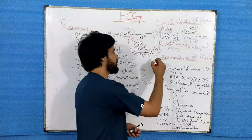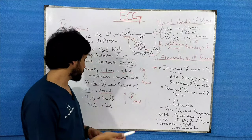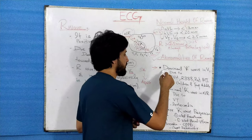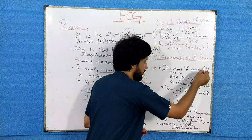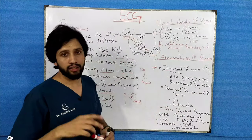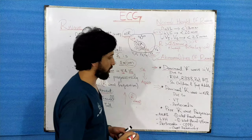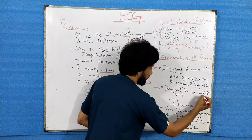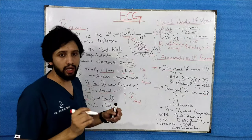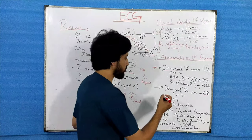The abnormalities of the R wave include: number one, a dominant R wave in V1 — normally you see a small R wave in V1 or V2, so a dominant R wave in V1 is abnormal. It can be due to RVH, RBBB, or posterior MI. In children and young adults it can be normally dominant. Second, dominant R wave in AVR — normally there is no R wave in AVR.